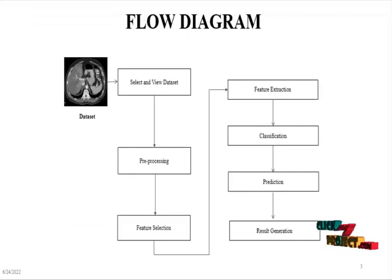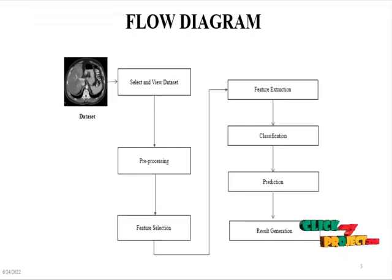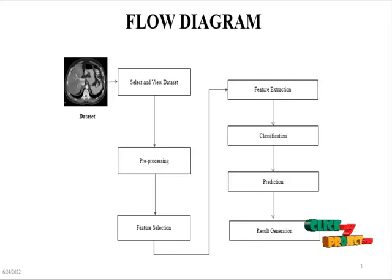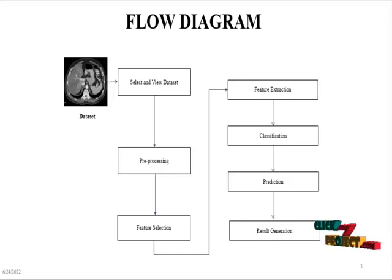The flow diagram of the project begins with selecting CT scan images, which are then passed through pre-processing techniques. In pre-processing, we apply the CLAHE filter, which is used to increase the contrast of the input images. After that, it is passed into the feature selection module.